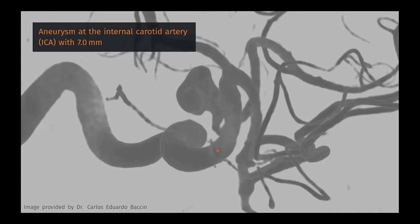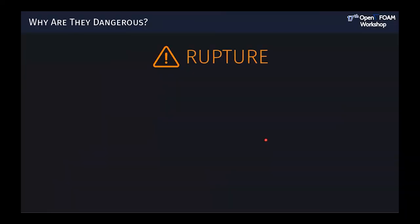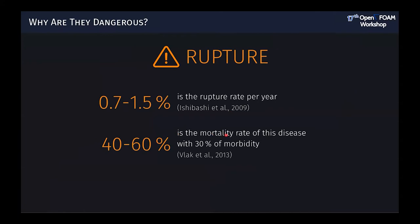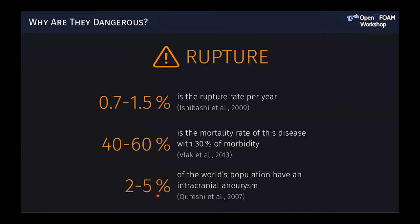Aneurysms can grow as large as 25 millimeters. The main problem is that they may rupture, causing a fatal event called subarachnoid hemorrhage. Although the rupture rate per year is relatively small, the mortality rate is up to 60 percent, with 30 percent morbidity among survivors. Additionally, it is a prevalent disease, with some estimates showing it may affect up to five percent of the world's population — around 200 million people.